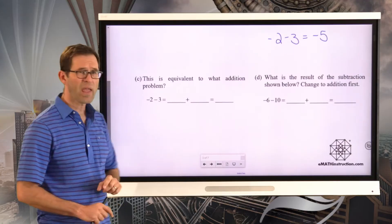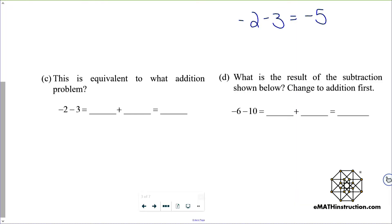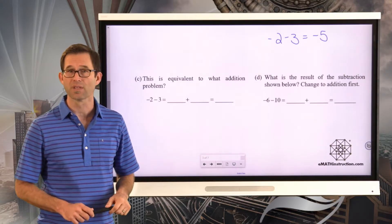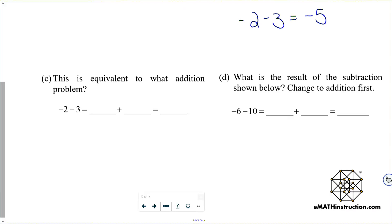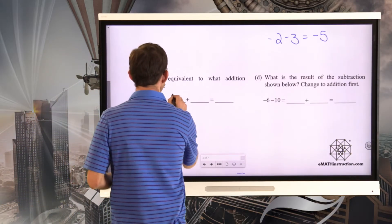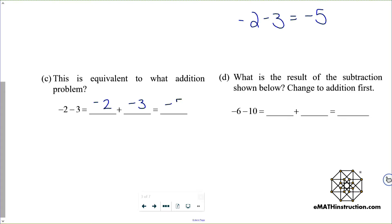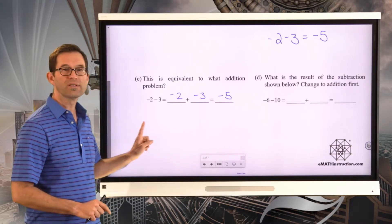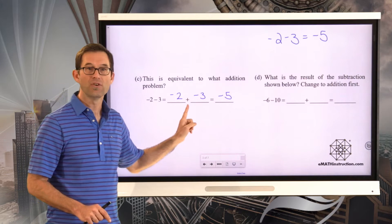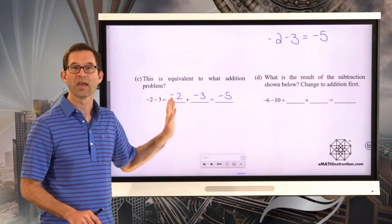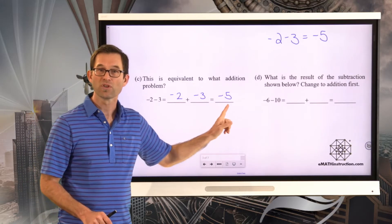Letter C asks us to fill in some blanks: this is equivalent to what addition problem? Negative 2 minus positive 3 is the same as negative 2 plus negative 3, and it fits the pattern — when we subtract off a number, we can change that subtraction into an addition of the opposite of what we're subtracting. So negative 2 minus 3 is the same as negative 2 plus negative 3, which gives us negative 5.